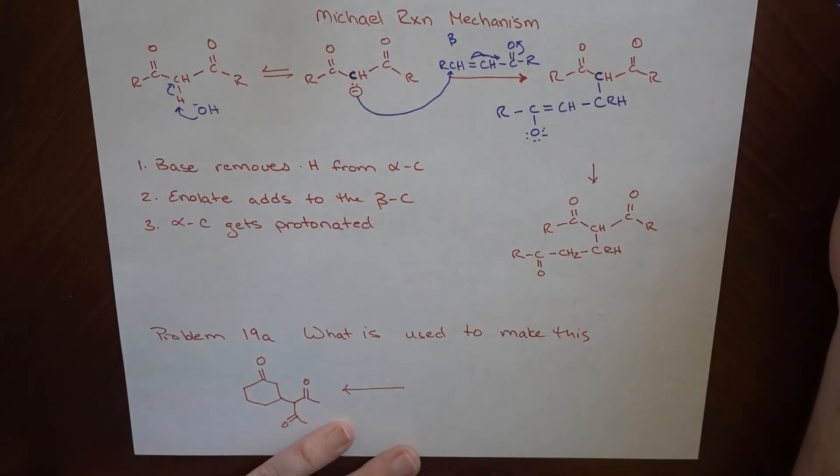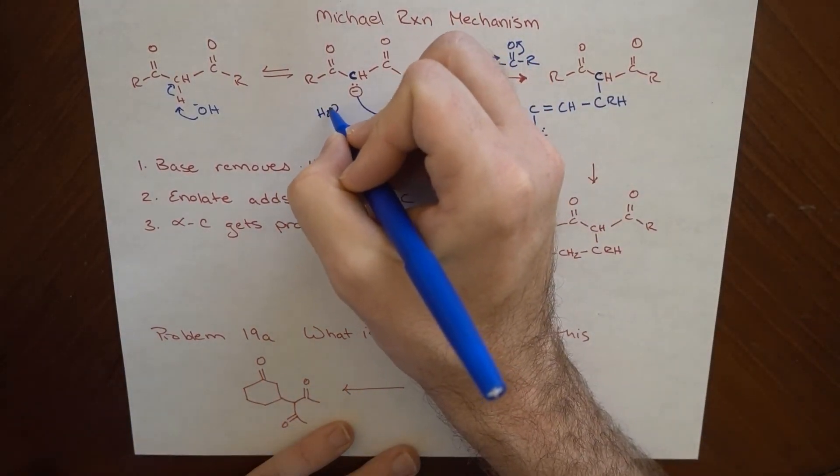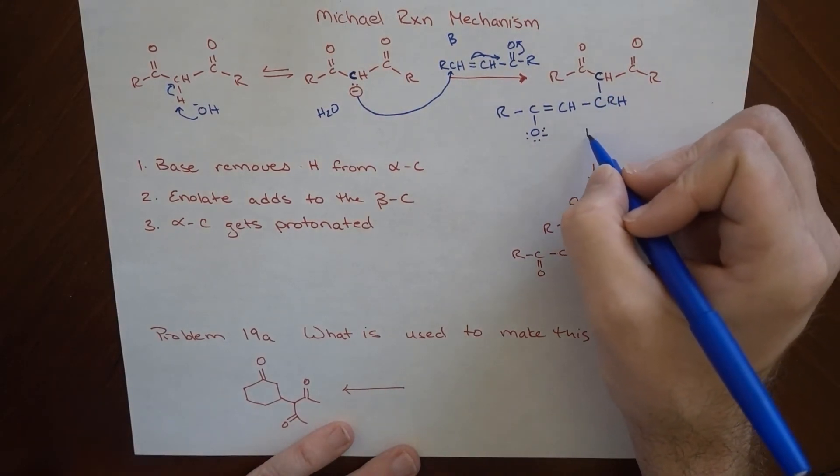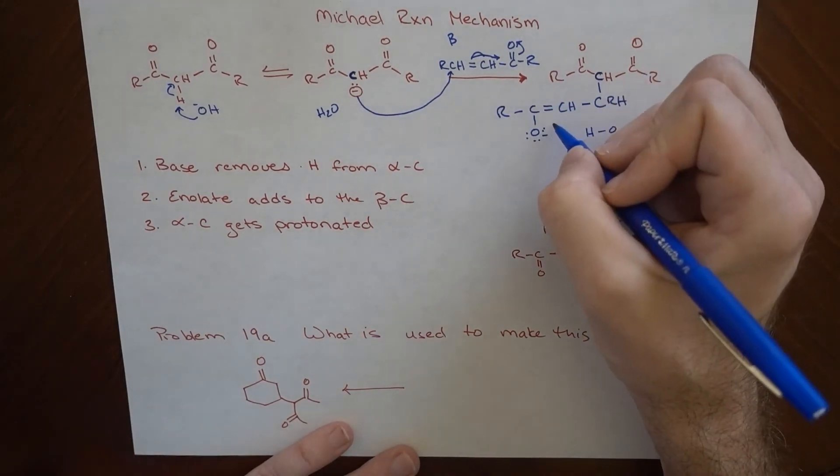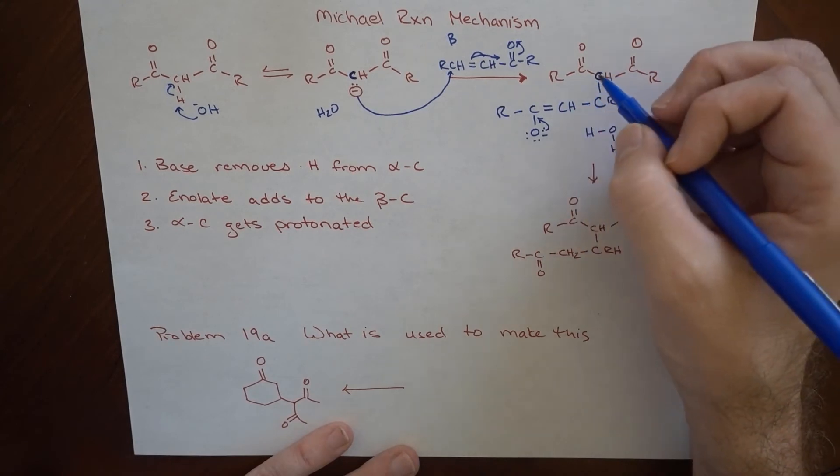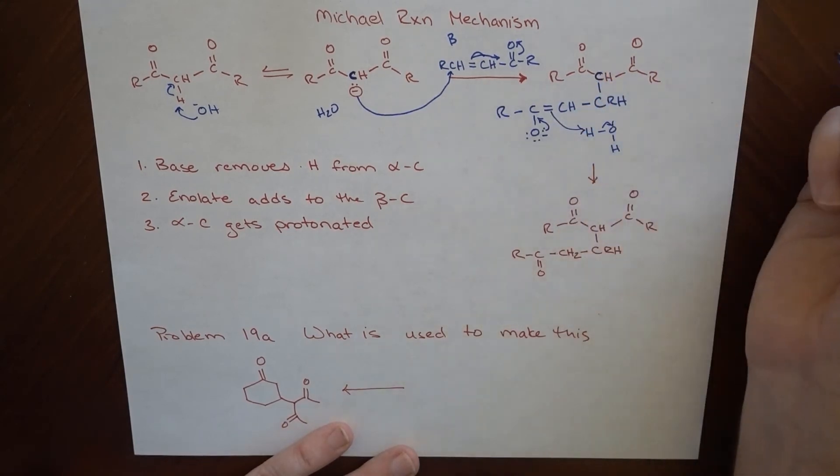So what ends up happening here? So we've got the water. So remember, we formed water, the conjugate acid of that base. So we've got water that's over here, HOH. And these electrons are going to come back down to reform our carbonyl, and then these electrons are going to grab this hydrogen and give it back to here.